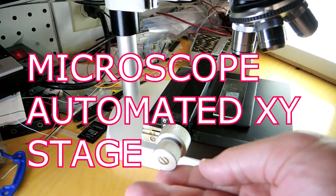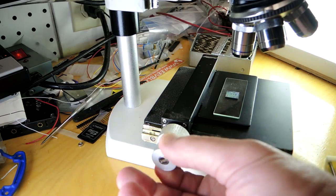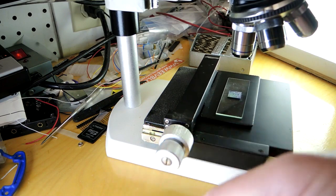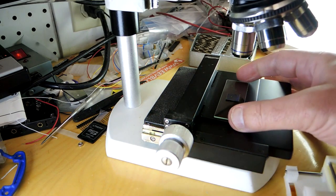This is a metallurgical microscope and it's been equipped with a manual XY table. The purpose of this table is to allow the specimen to be moved around.